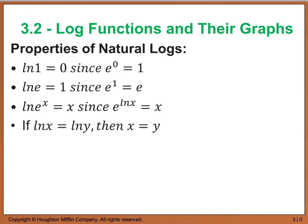Just like we had with logs, we also have properties of natural logs. The natural log of 1 is 0, because e to the 0 is 1. The natural log of e equals 1, since e to the 1st equals e. Remember, we really have y equals the log base e of x — raise the base to the power of y and that gives you x. The natural log of e to the x: because e and natural log are inverses of one another, they cancel out and leave you with just x.